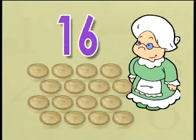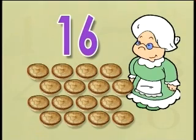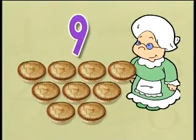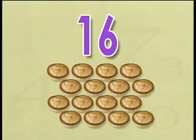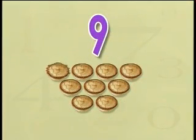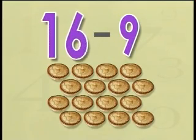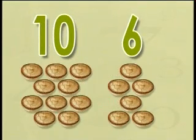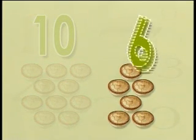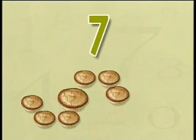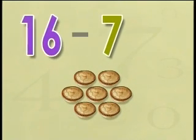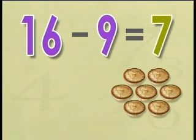Mrs. Wong needed 16 pies for a tea party, but she only had baked 9 pies. How many more pies did she have to bake? We minus 9 from 16. 16 is 10 and 6. We hold 10 in our head, we take 6 out, and 3 more from the 10 in our head — that leaves us with 7. So 16 minus 9 equals 7. Mrs. Wong will have to bake 7 more pies to get her total of 16.